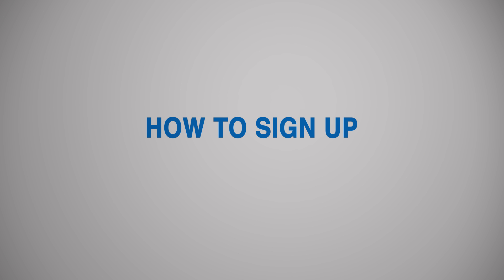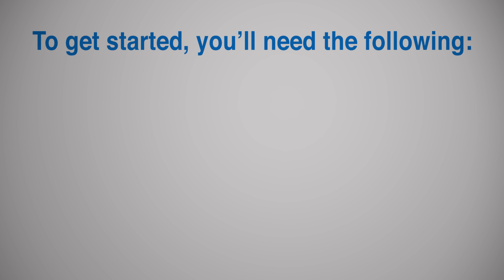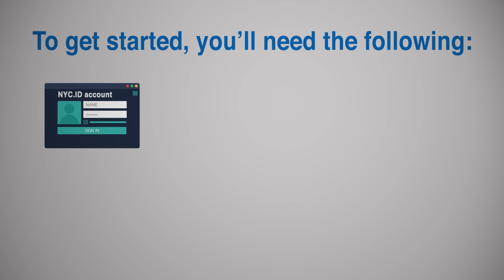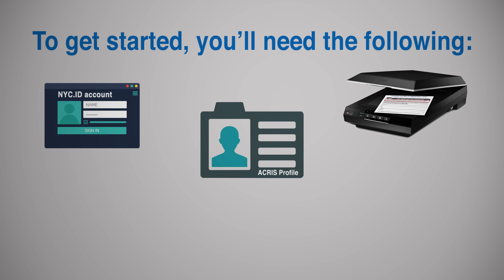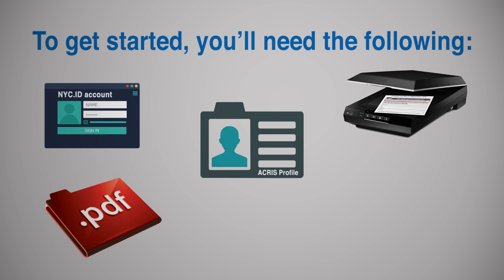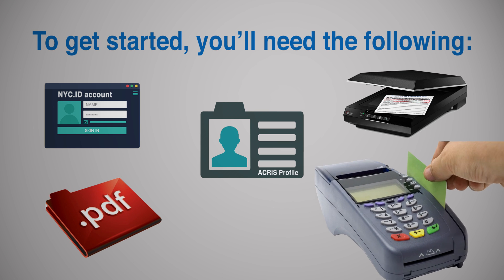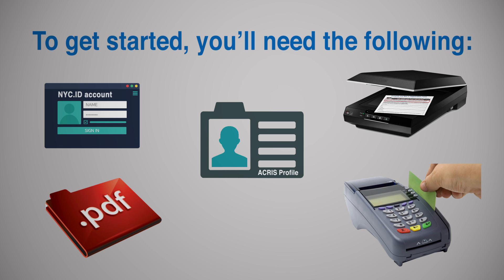How to sign up. To get started, you'll need the following: a citywide nyc.id account, an ACRIS profile, a document scanner, software capable of producing PDF files, and the ability to make electronic payments including using a normal paper check as an e-check.